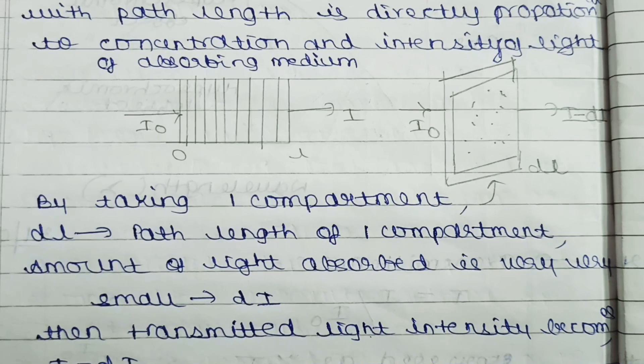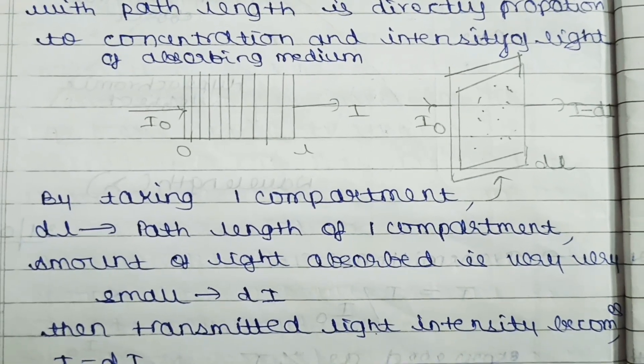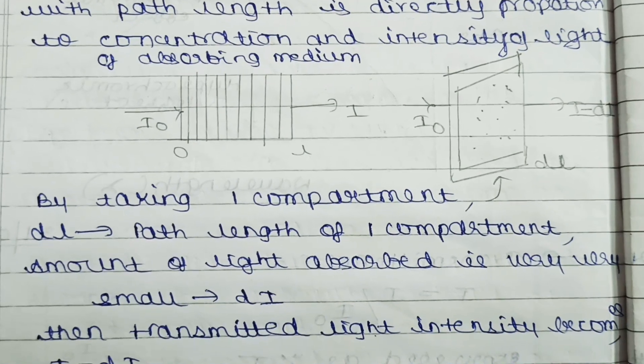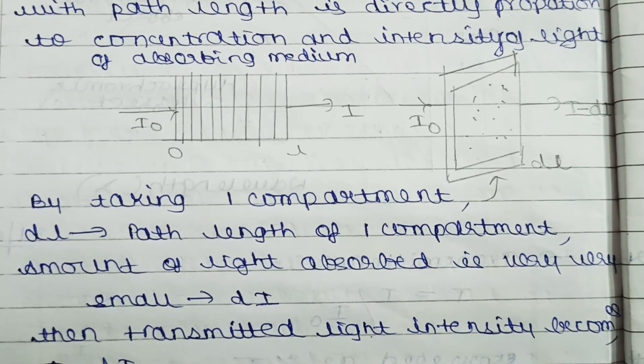Because the total light is I, the smaller portion we have taken absorbs a smaller amount of light, which becomes DI. For calculating the transmitted light, it becomes I minus DI.